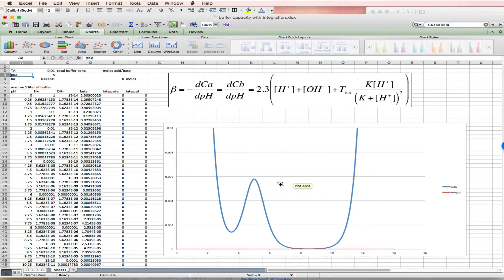So I have implemented this function to produce this curve in this part of the spreadsheet. Here's my pH going down. H plus is computed from the pH. OH is computed from KW divided by H plus.